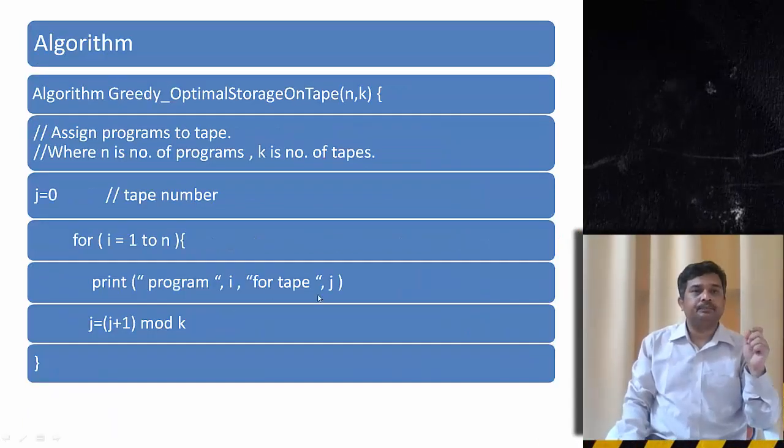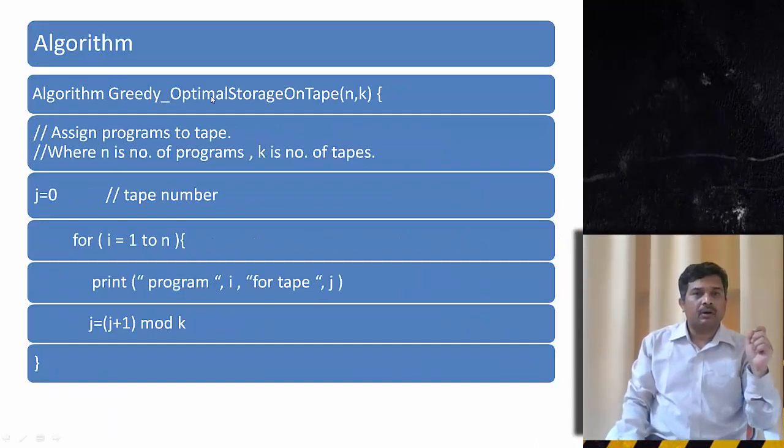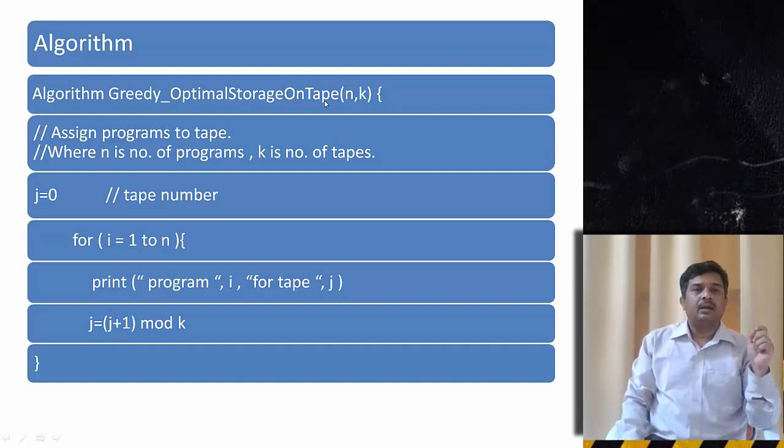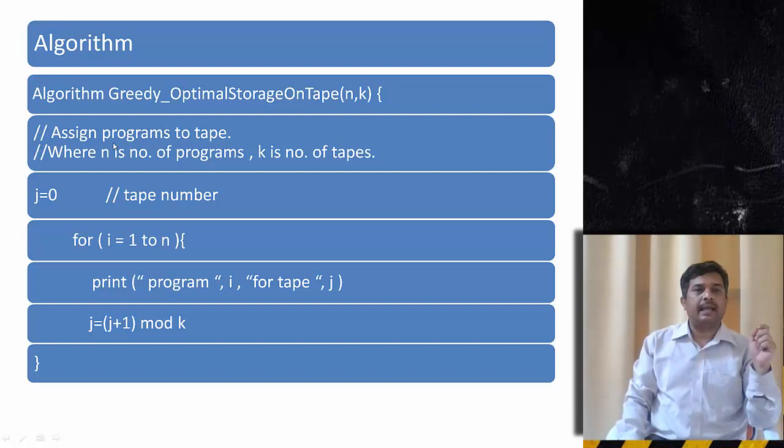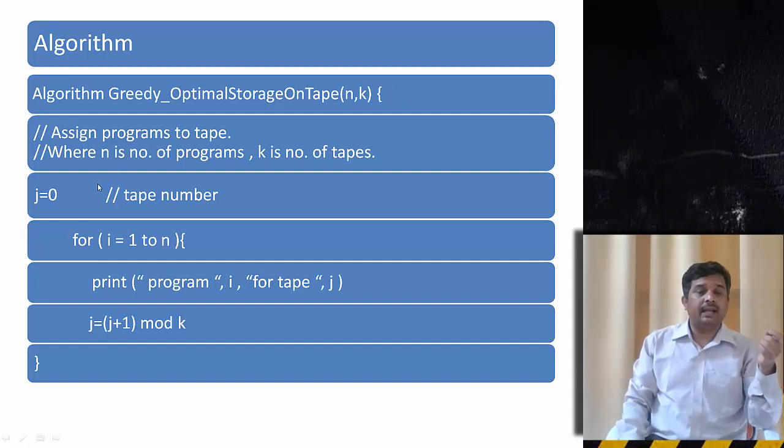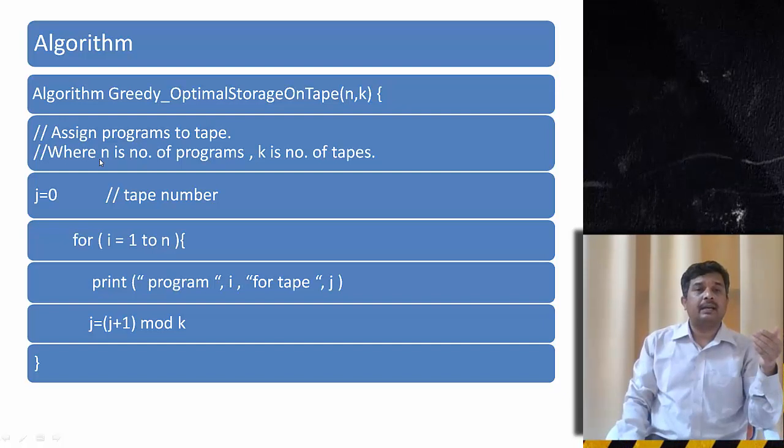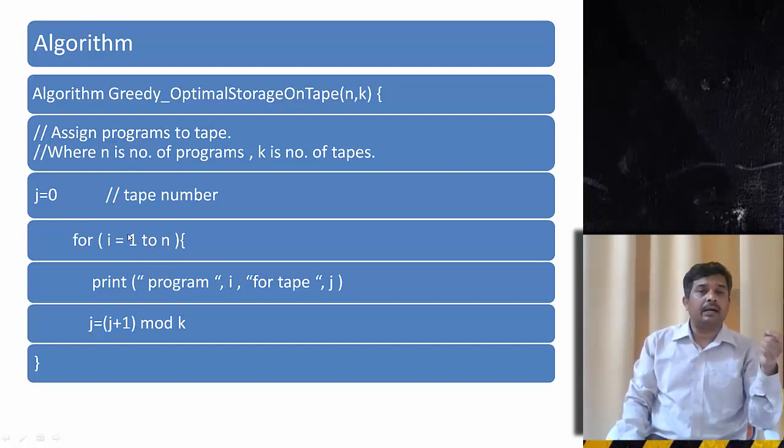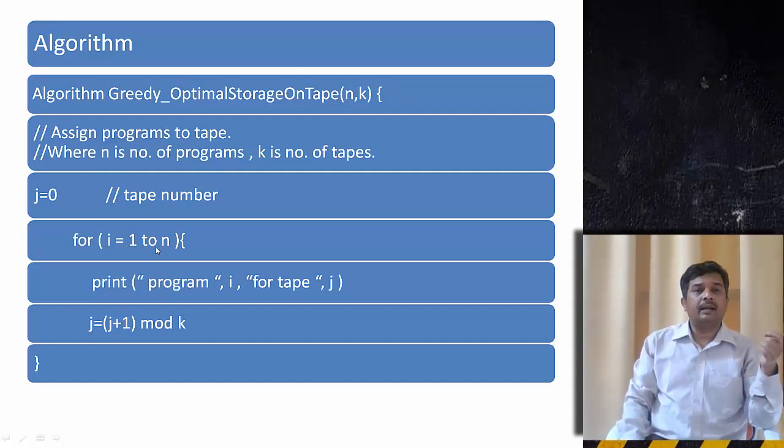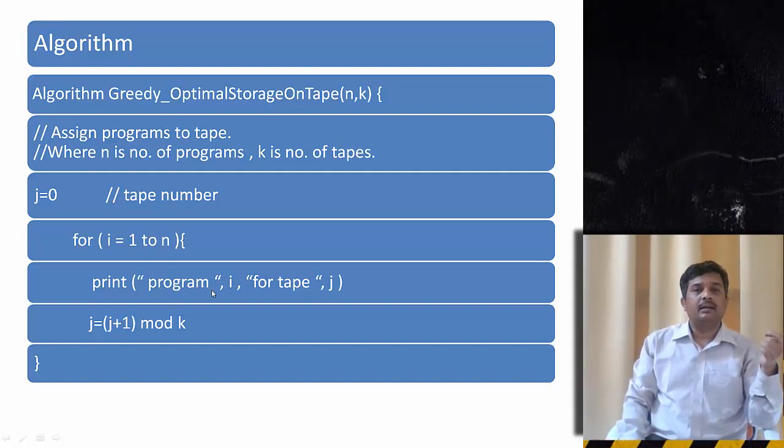Let us see the algorithm. Greedy algorithm for optimal storage on tape: assign programs to tape where n is the number of programs and k is the number of tapes. Let us say j I am initializing and it is indicating the tape number. For i equal to 1 to n, because there are n number of programs and the loop is starting with 1, I vary from 1 to n. I will write the program i for tape j when j equal to j plus 1 mod k. At the end of this program I will be able to allot the optimal storage. So the complexity of the program will be theta of n.